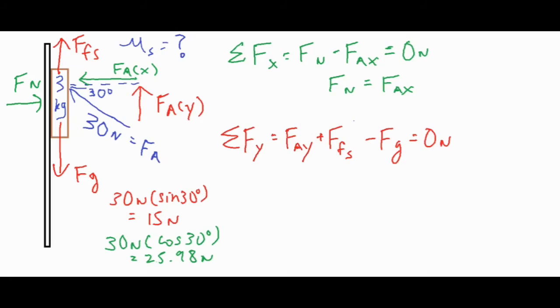Now we have all the values we need at the moment, and one more value we can get is our Fg which is equal to mg, the mass times 9.8. 3 times 9.8 is going to give us 29.4 newtons.